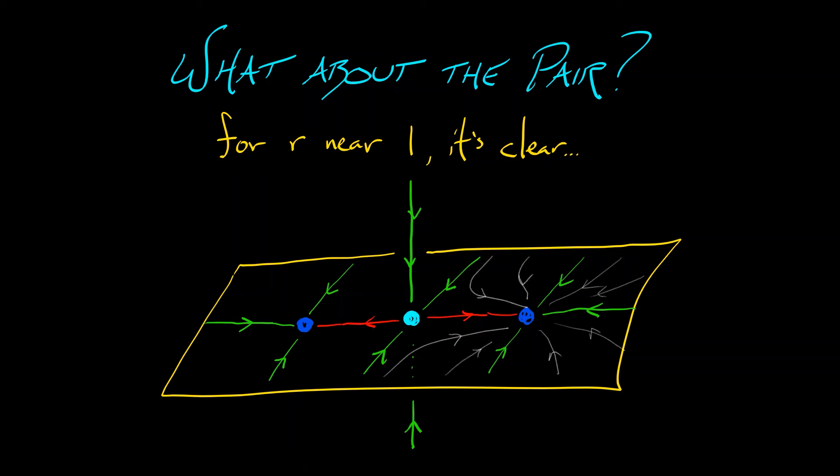we still have those two other directions of stability. That has not changed under this bifurcation. That means that for values of r that are close to, but a little bit bigger than one, what we have is a pair of sinks. That is, of course, consistent with what we would be seeing in a supercritical pitchfork.